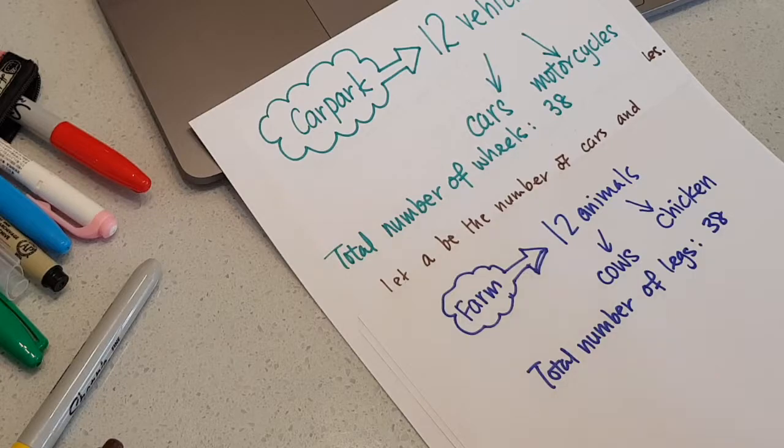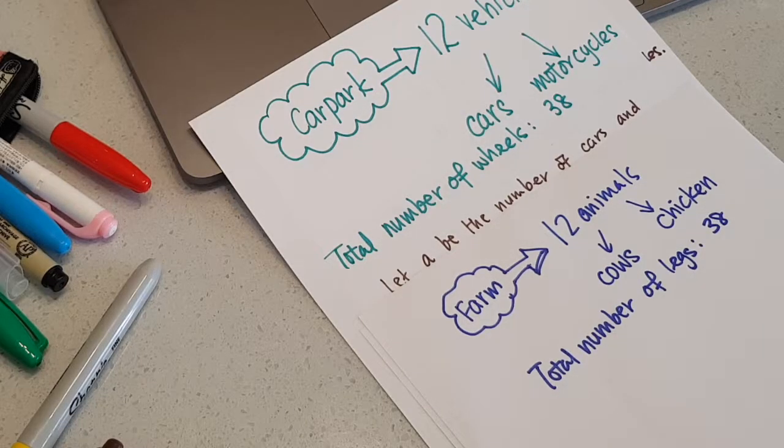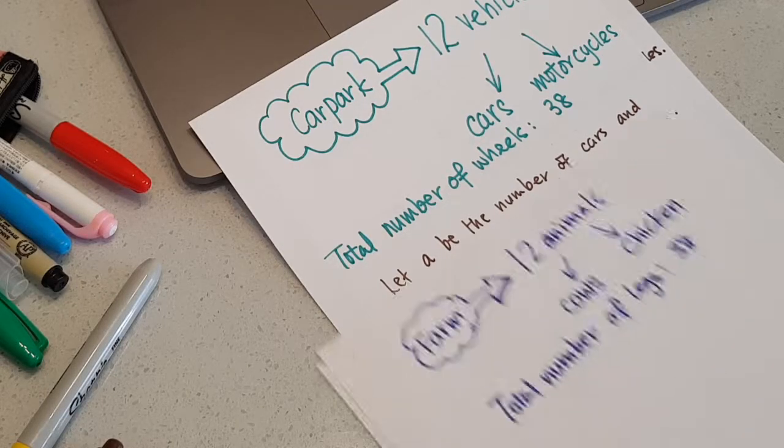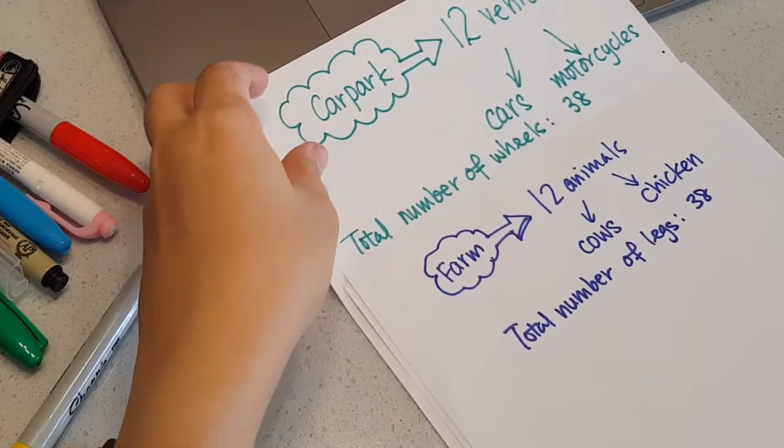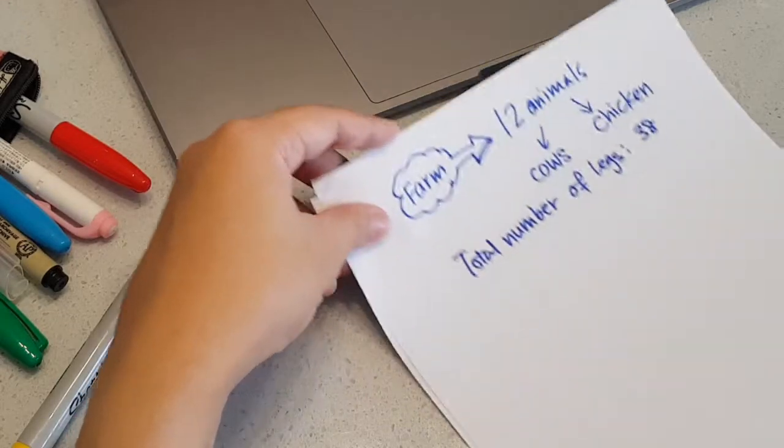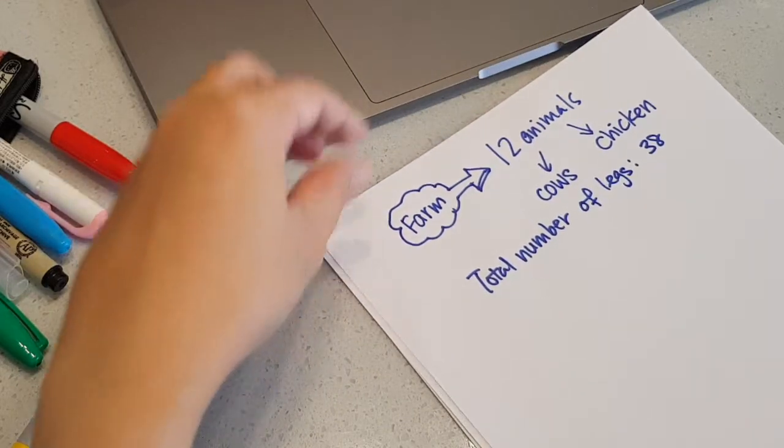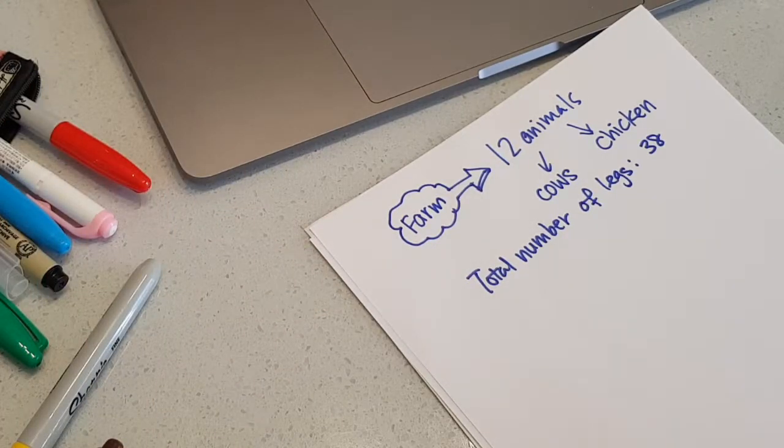The question can be solved the same way by using supposition or by solving simultaneous equations. But now I'm going to solve this question by illustrating, by drawing the numbers out. This is actually suitable for middle memory three and four when they just started learning supposition and they find it difficult to comprehend and explain in words. You can actually draw it out.